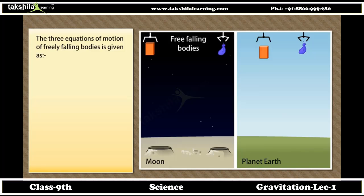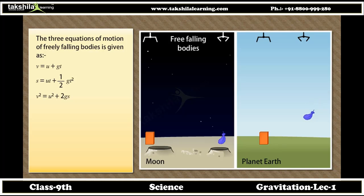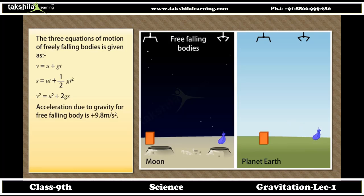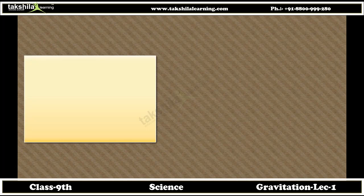Equations of motion for freely falling bodies: V = U + gT; S = UT + ½gT²; V² = U² + 2gS. Acceleration due to gravity for a freely falling body is +9.8 m/s². Acceleration due to gravity for a body thrown upwards is −9.8 m/s². The weight of an object on the moon is 1/6th of that on earth.